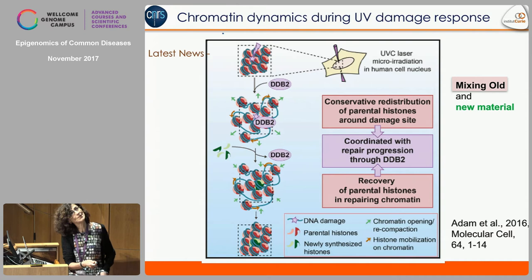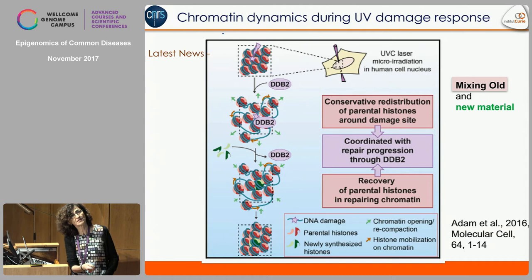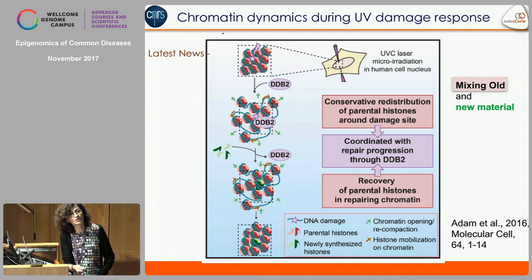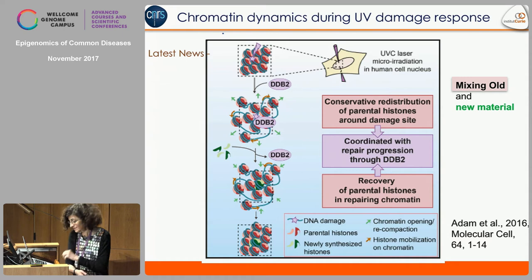Concerning DNA damage, in that instance the mixing of old and new material, in collaboration with Sophie Polo, showed a conservative redistribution of parental histones around the DNA damage, coordinated with repair progression through a particular factor called DDB2. There is thus a recovery of parental histones in repairing chromatin along with a mixing of some new histones — a delicate balance that we need to understand how it can be controlled or altered.